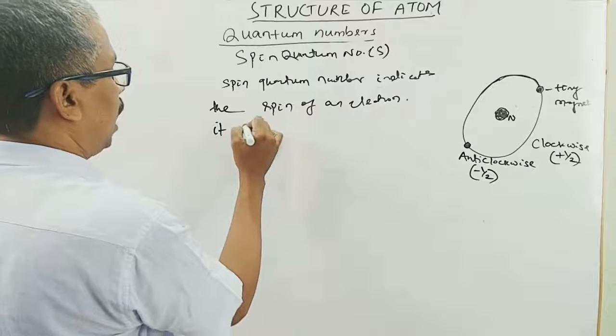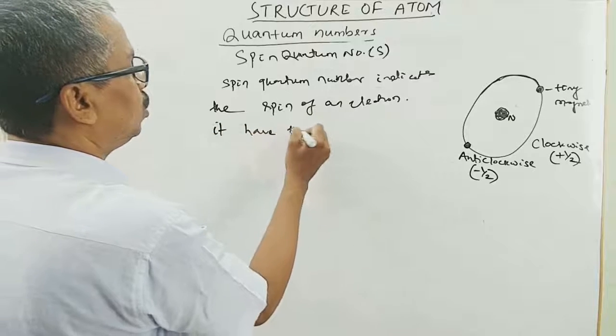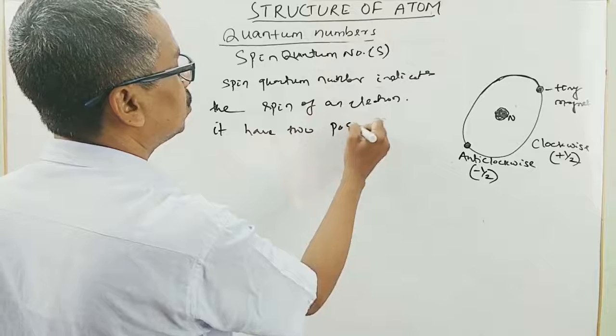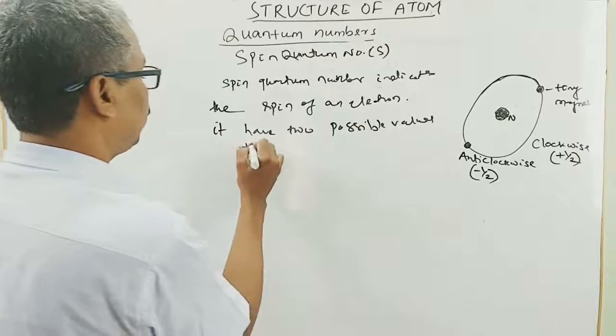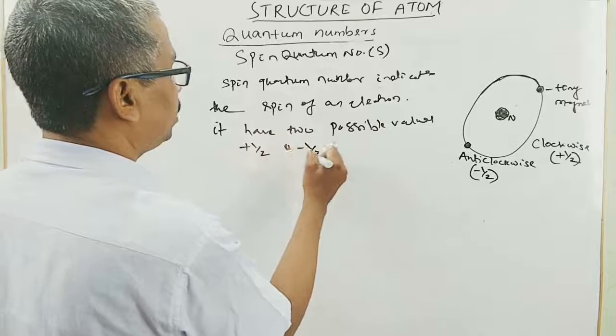And it have two possible values: plus half and minus half.